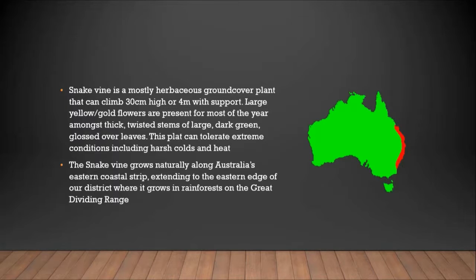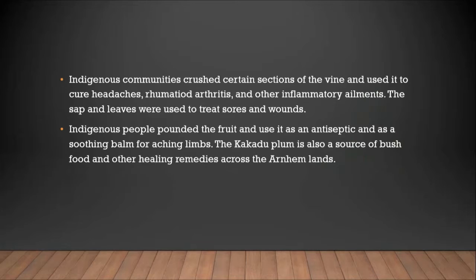This plant can tolerate extreme conditions, including harsh colds and heat. The Snake Vine grows naturally along Australia's eastern coastal strip, extending to the eastern edge of the district, where it grows in the rainforests of the Great Dividing Range.